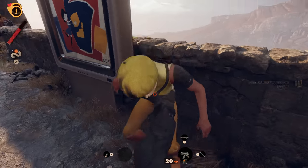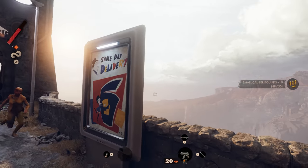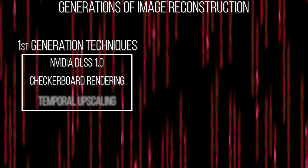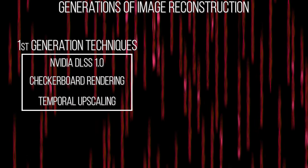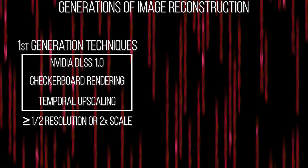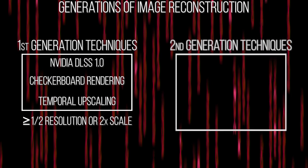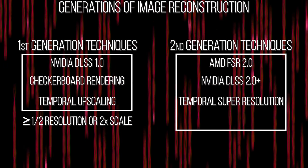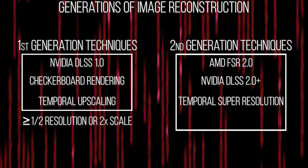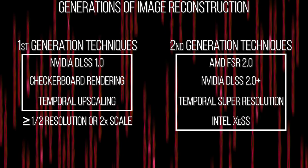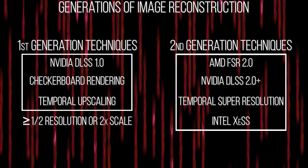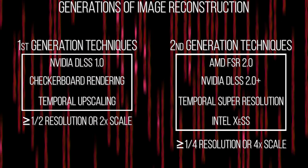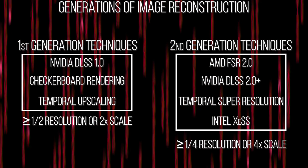FSR 2.0 is also what I would call a second-generation image reconstruction technique, where the likes of DLSS 1.0, checkerboard rendering, or older forms of TAA upsampling aimed to produce native-like image quality at roughly half the internal resolution. FSR 2.0, like Nvidia's DLSS 2.0+, or Epic's TSR found in Unreal Engine 5, or Intel's XeSS, aims to provide native-like image quality while the real internal resolution is 25% or even lower than that compared to the output resolution.